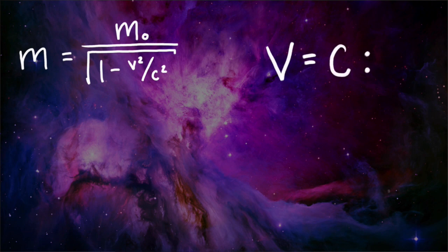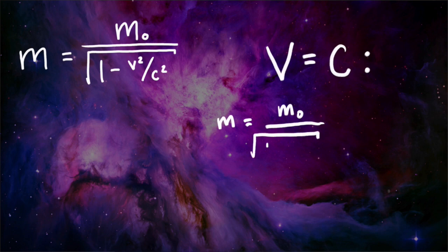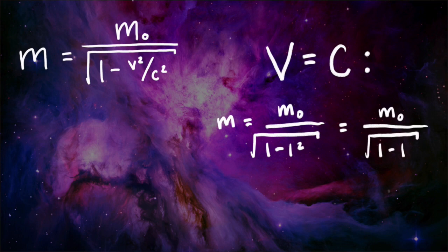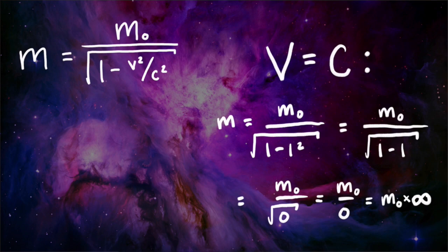When we get to the speed of light, we run into issues. Mass equals resting mass divided by the square root of 1 minus 1 squared, which is resting mass divided by the square root of 0, which is resting mass times infinity. So to travel at the speed of light, you need enough fuel to multiply your own mass by infinity — good luck. To travel faster than the speed of light, you need to take the square root of a negative number, which is as imaginary as warp drive.